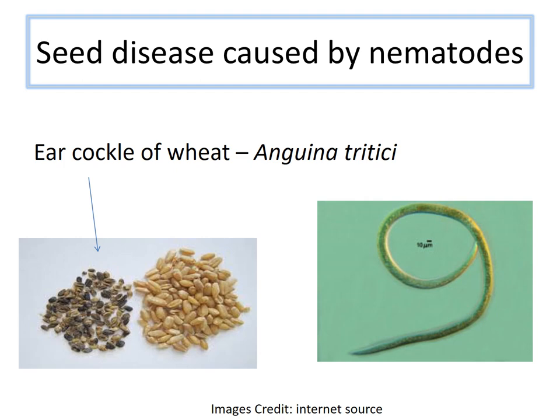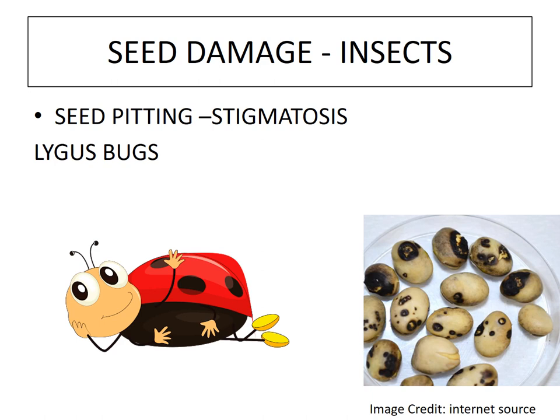Seeds can be victims of detriments such as insect damage. We have come across seeds without embryos, seeds without endosperms, seed pits, or seed holes. Seed pitting, or stigmatosis, is due to insects. Examples are lygus bugs, which feed on seeds forming irregular craters in the cotyledons.